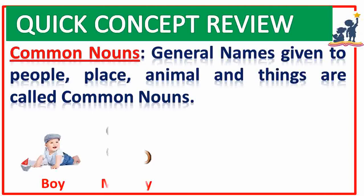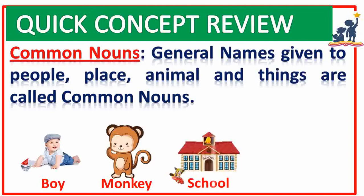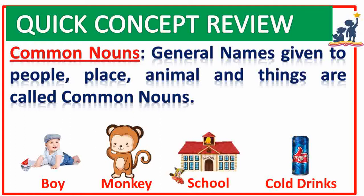Common noun. General names given to people, place, animal and things are called common nouns. For example: boy — that is the name of a person; monkey — name of an animal; school — name of a place; cold rings — that is also the name of a thing.